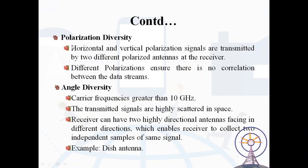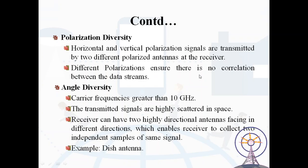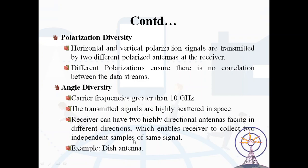In spatial diversity there are two additional types: polarization diversity and angle diversity. In polarization diversity, horizontal and vertical polarization signals are transmitted by two differently polarized antennas at the receiver, ensuring no correlation between the data streams. In angle diversity, the carrier frequency should be greater than 10 GHz and transmitter signals are highly scattered in space. The receiver can have two highly directional antennas facing in different directions, enabling the receiver to collect two independent samples of the same signal — for example, a dish antenna.